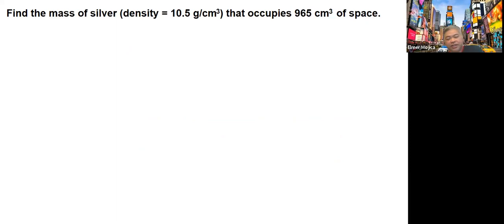Last one: find the mass of silver with a density of 10.5 grams per cubic centimeter that occupies 965 cubic centimeters. Again, density equals mass over volume. The one we're asked for is mass.